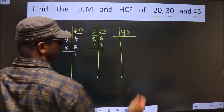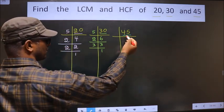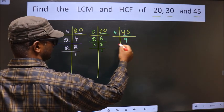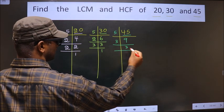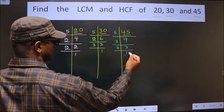Now here we have 45. 45 is 5, 9 is 45. 9 is 3, 3 is 9. Now 3 is a prime number, so we take 3, 1 is 3.